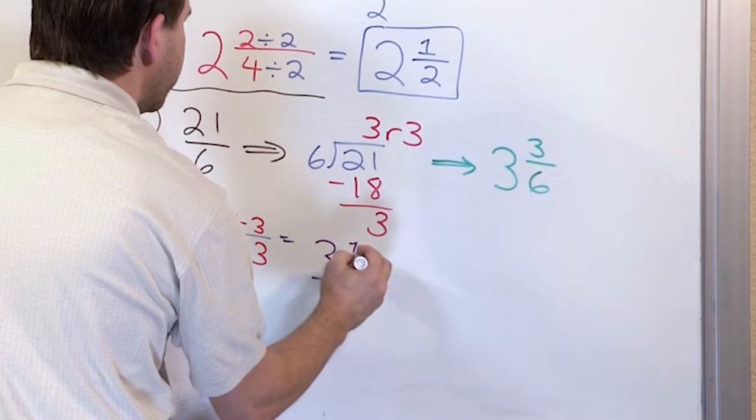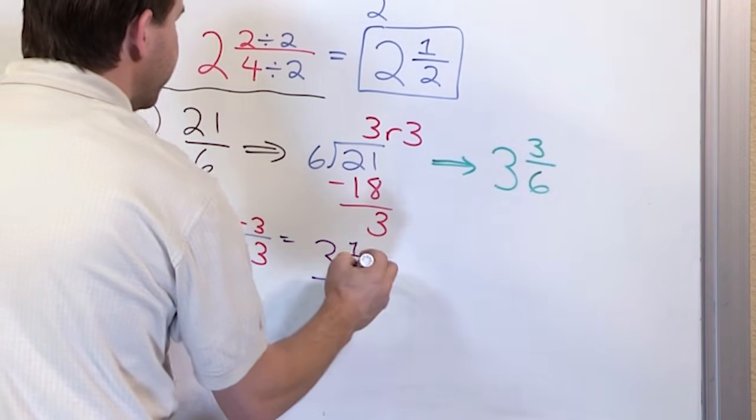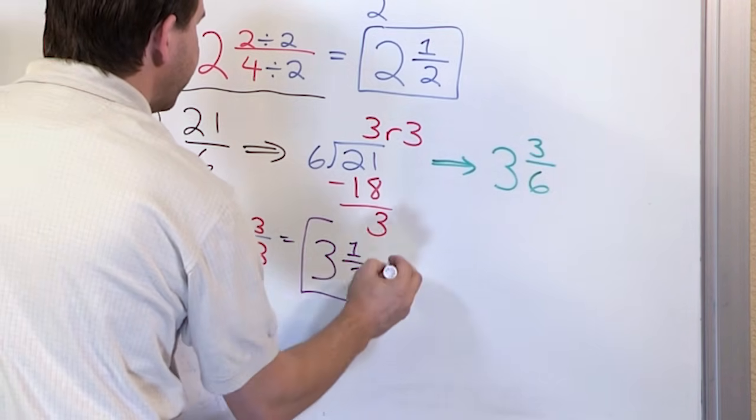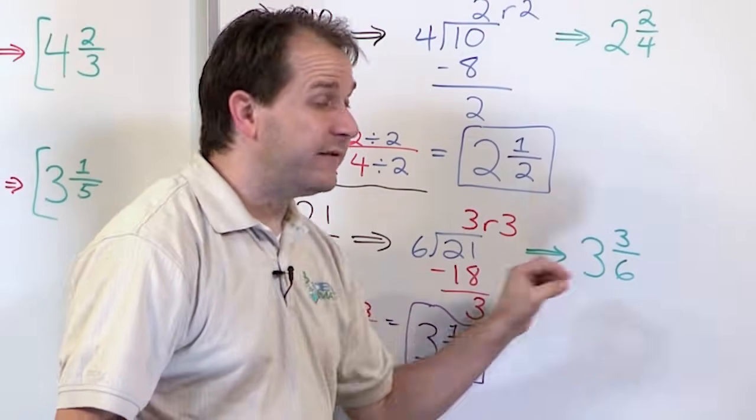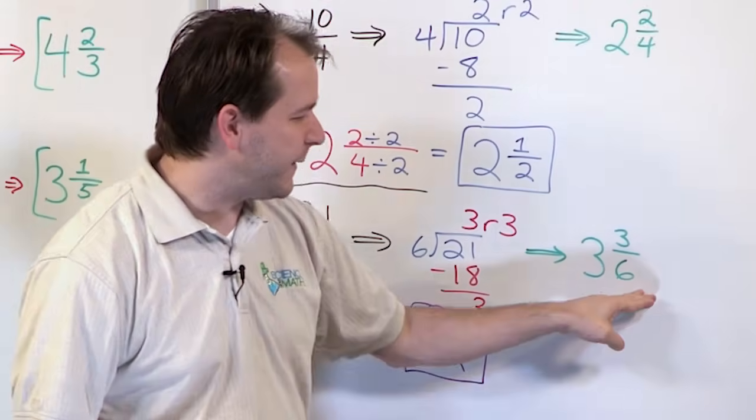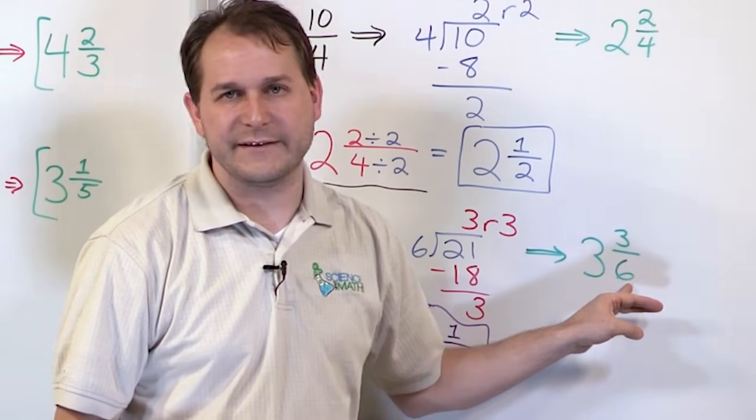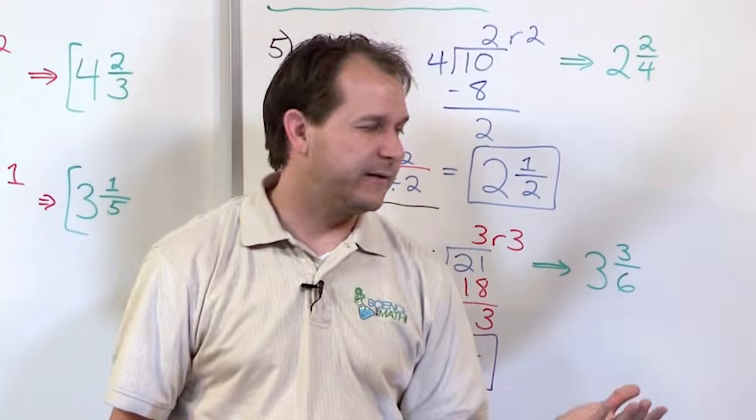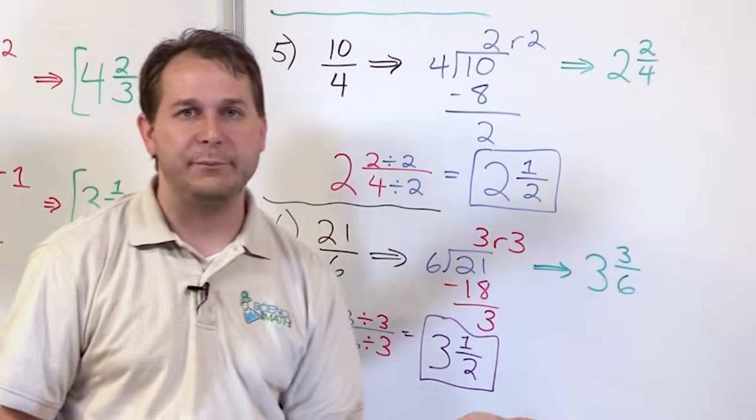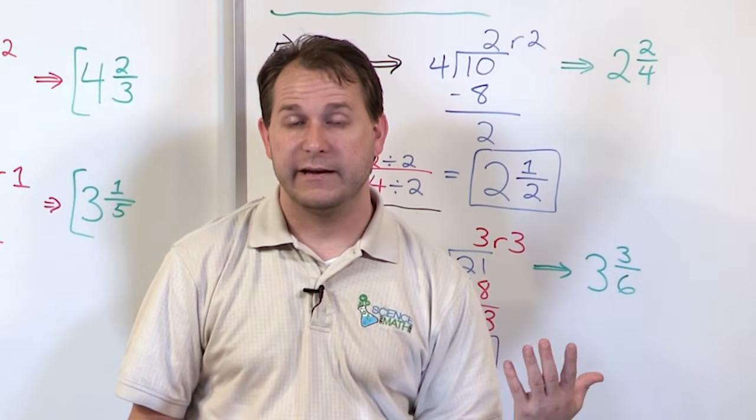So what's going to happen is you'll get 3 from here. 3 divided by 3 is 1, and 6 divided by 3 is 2. So the answer is actually 3 and a half, which is exactly the same as 3 and 3 sixths. If you take a pizza, chop it into 6 pieces, and take 3 of those pieces, that's like having half of the pizza. So it's like having 3 and a half pizzas.